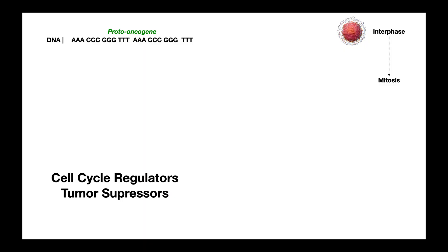Welcome back to Catalyst University. My name is Kevin Togoff. In this video, we're going to do two main things: number one, we're going to differentiate between what are called proto-oncogenes and oncogenes and see how oncogenes can cause cancer. And number two, we'll look at the function of tumor suppressor genes and see how mutations in those can also cause cancer.